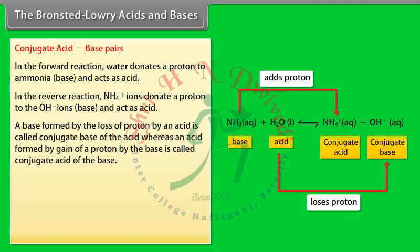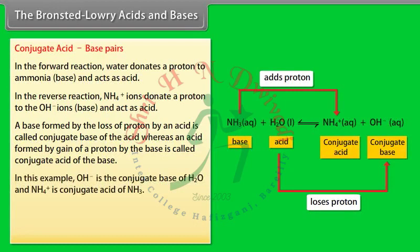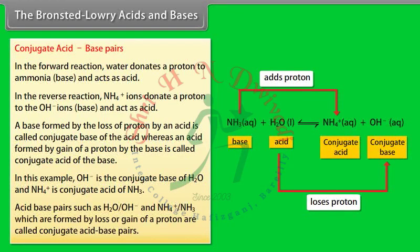A base formed by the loss of a proton by an acid is called the conjugate base of the acid, whereas an acid formed by the gain of a proton by a base is called the conjugate acid of the base. In this example, OH⁻ is the conjugate base of H₂O and NH₄⁺ is the conjugate acid of NH₃. Pairs such as H₂O/OH⁻ and NH₄⁺/NH₃, formed by loss or gain of a proton, are called conjugate acid-base pairs.